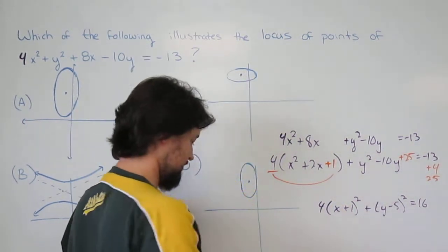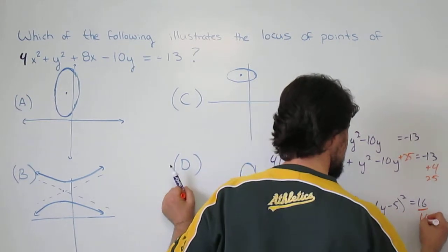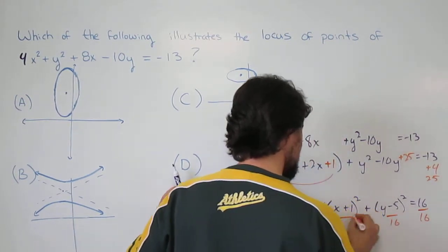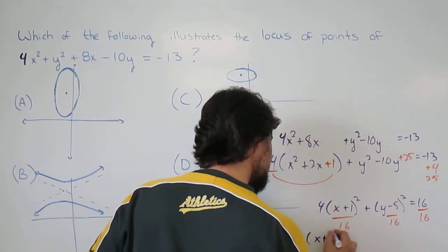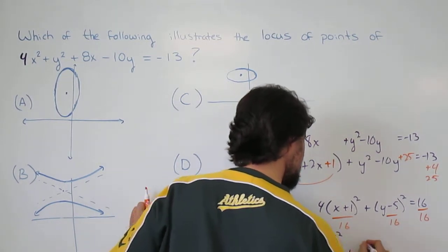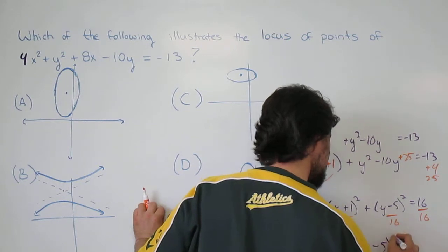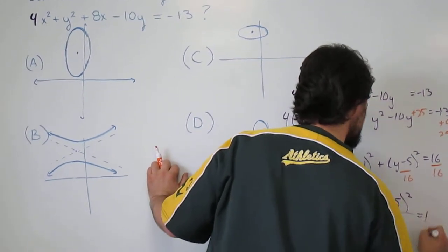Recall for the ellipse we want to set it equal to 1. So x plus 1 squared over 4 plus y minus 5 squared over 16 equals 1. This equals b squared, this equals a squared.